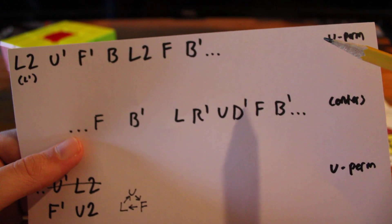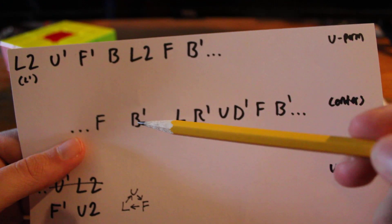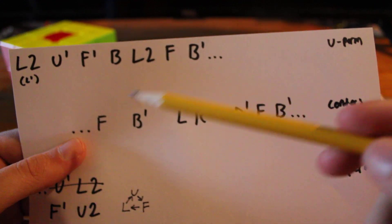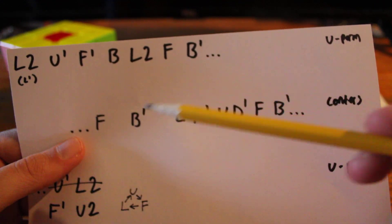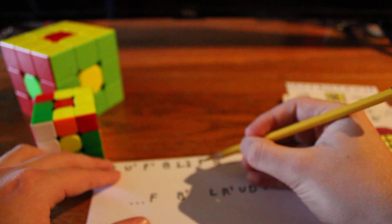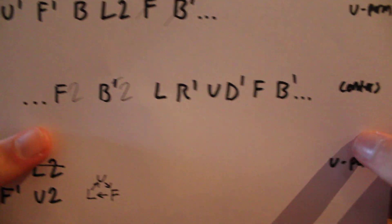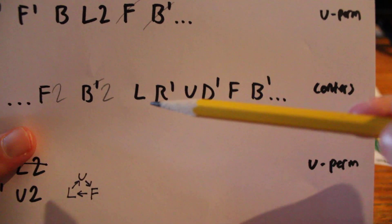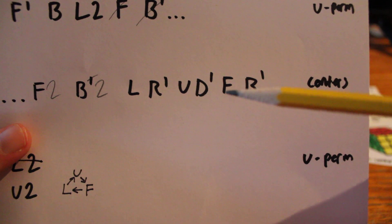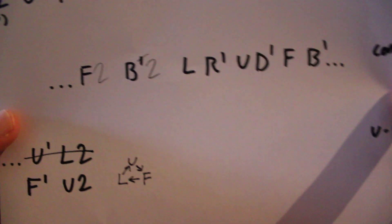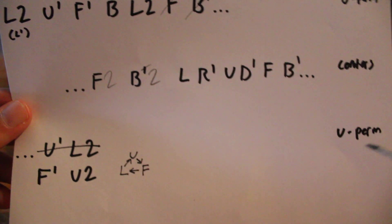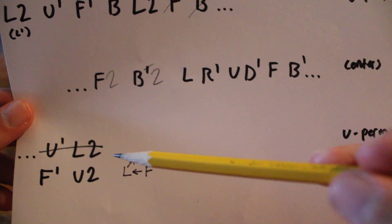Now, I actually stop the U-perm here and begin the center permutation algorithm because this F and this F and this B' and this B' can actually combine into F2 and B2, just like that. So, that's two cancellations right there. And then I continue with the center algorithm, L, R', U, D', F, B'. Now, the thing is, I go back to the U-perm at this point because the pieces just move around the cube in a manner where they stay in the same position relative to each other.